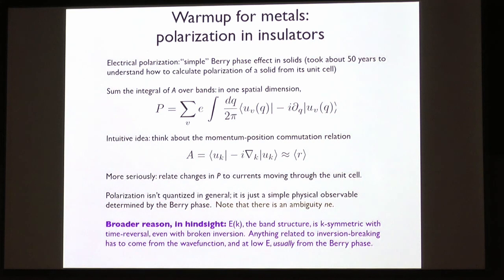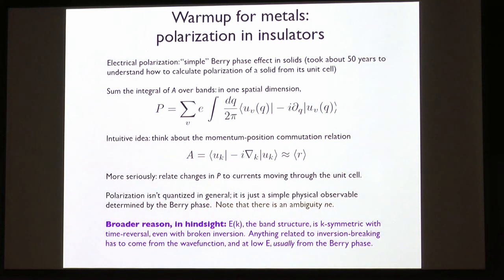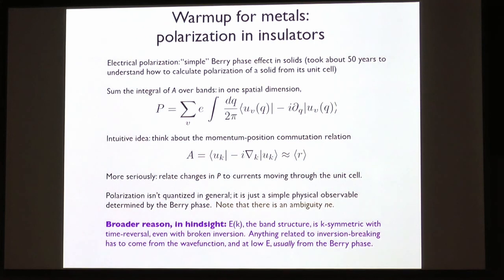Polarization is not in general quantized, but it is a physical observable determined by the Berry phase. If I've got materials that are non-magnetic — they have time-reversal symmetry — but they break inversion, then the band structure E(k) still equals E(-k) due to time reversal. So if I want a physical observable related to inversion breaking, it has to come from something other than just the band structure. At low energy, that's often the Berry phase — things involving wave function structure, not just energy.